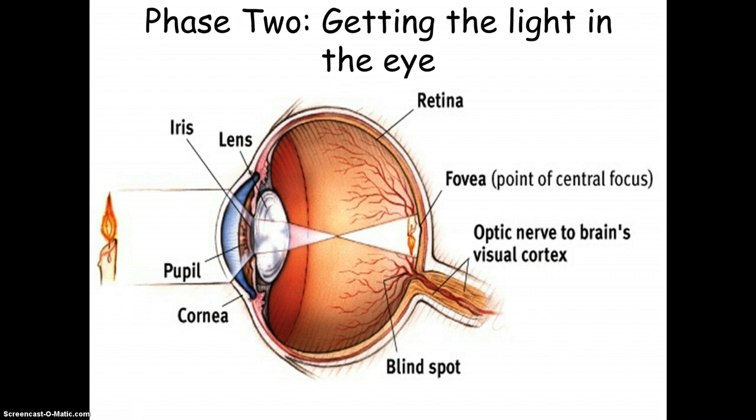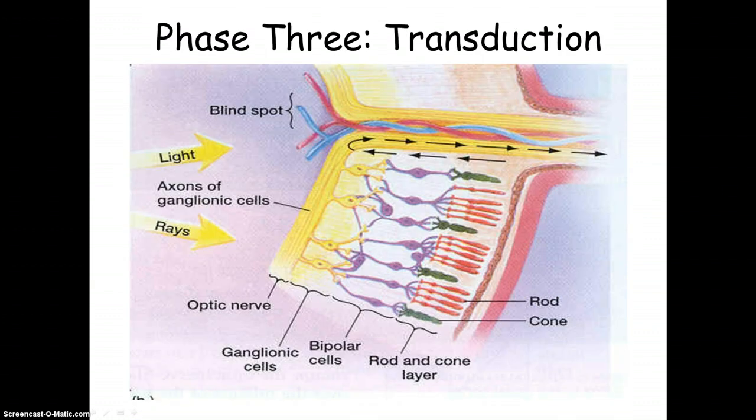So some details about the retina. The retina is the part of the eye that is converting these particles of light energy into the neural impulses. And then these are forwarded to the brain. So that process is transduction. So that gets us to phase three of vision.